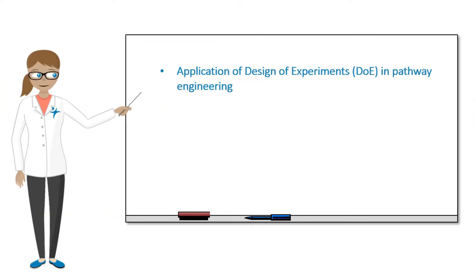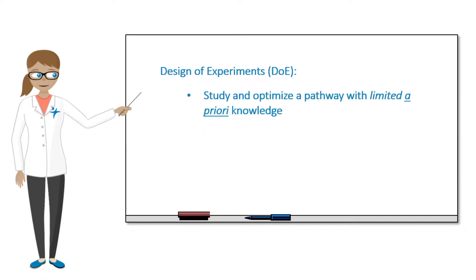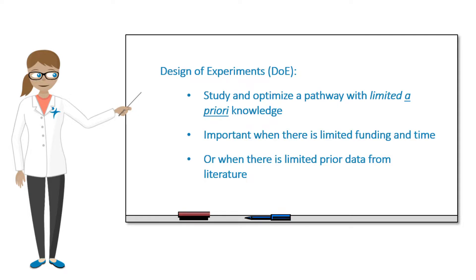In this video, you will learn about applying design of experiments in pathway engineering through a case study about bile acid production in Escherichia coli. You will see the steps involved to incorporate design of experiments in research and how the author was able to gain a 3.2-fold increase in production by optimizing the promoter strength of five enzymes involved in the pathway in just a small number of experiments. Furthermore, you will see how design of experiments can be a powerful method to study and optimize a pathway with limited a priori knowledge. This is important when there is limited funding and time, or when the enzymes involved have not been well characterized in literature.